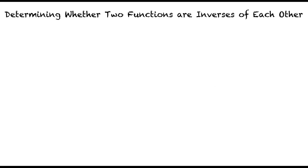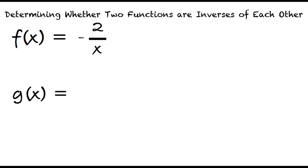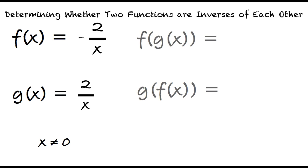Let's do another quick example. Suppose f of x equals negative 2 divided by x, and g of x equals 2 divided by x. Since fractions with 0 in the denominator can't exist, the parameters for this problem are that x is not equal to 0. We can solve for f of g of x equals negative 2 divided by 2 over x, and g of f of x equals 2 divided by negative 2 over x.